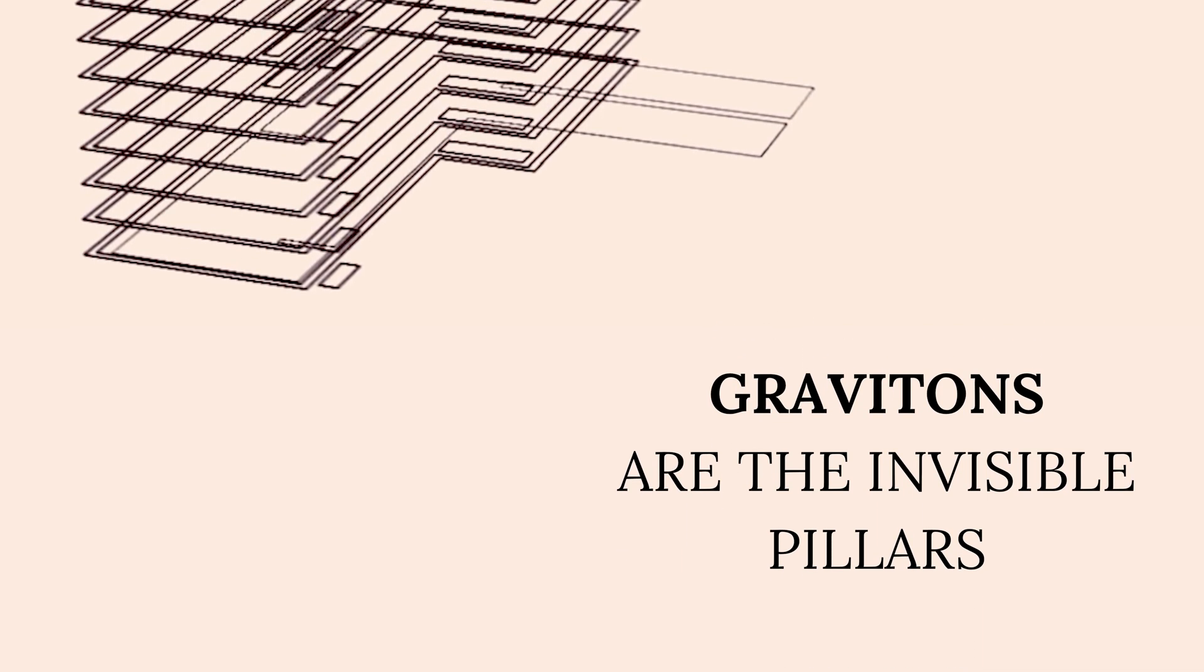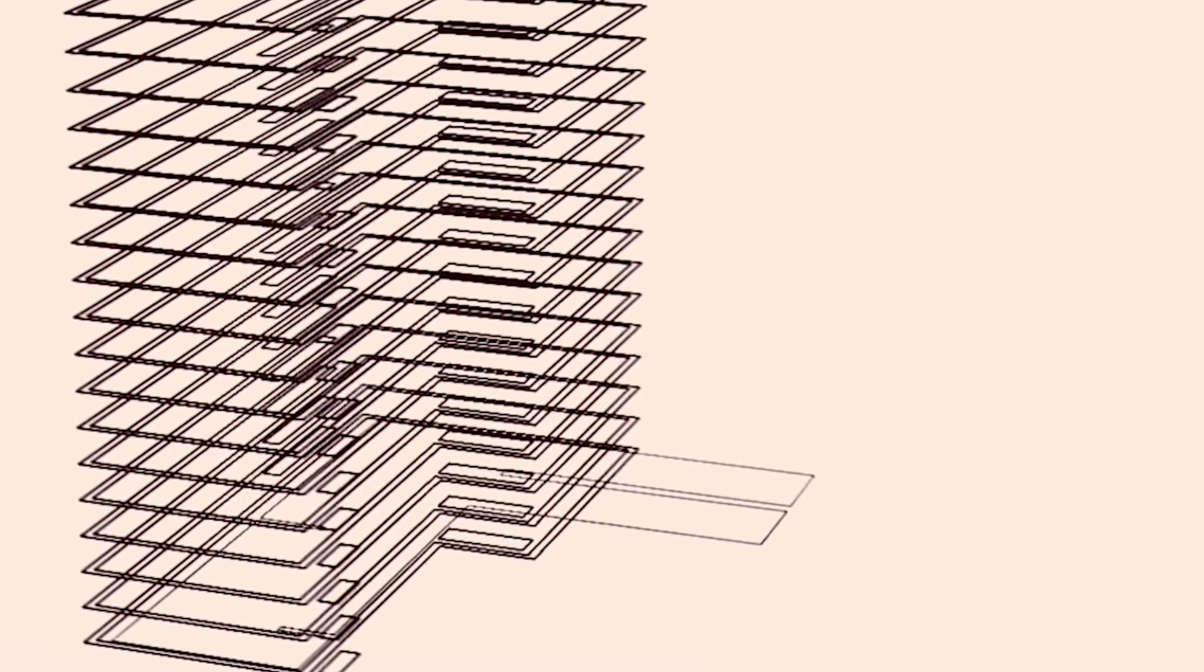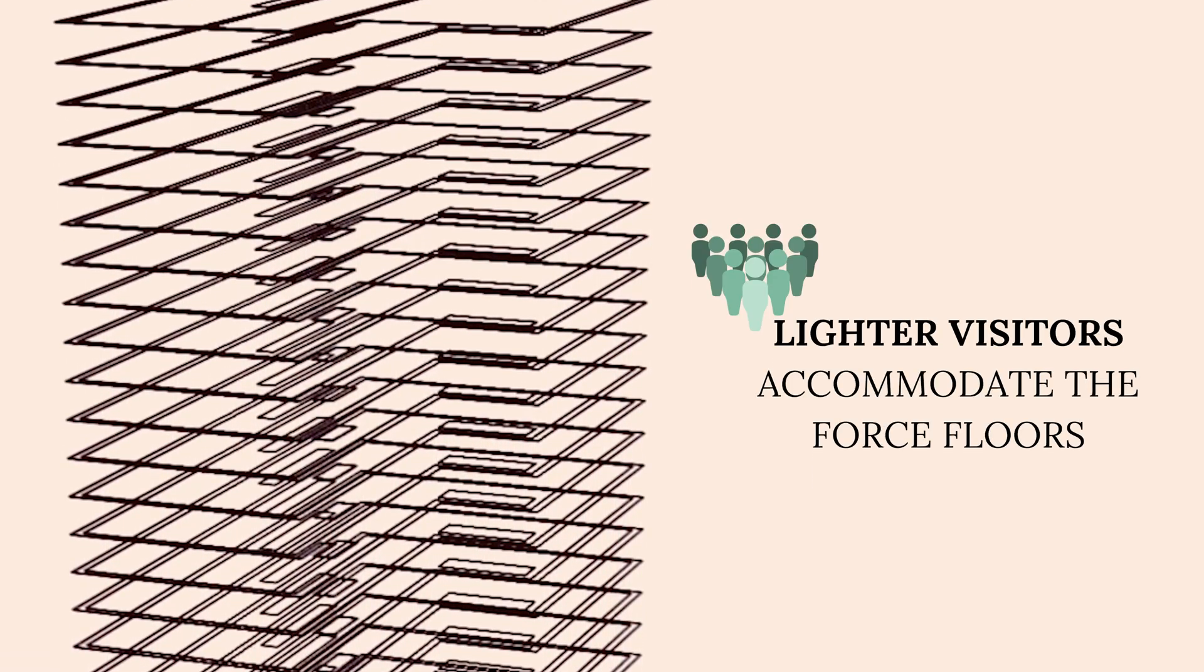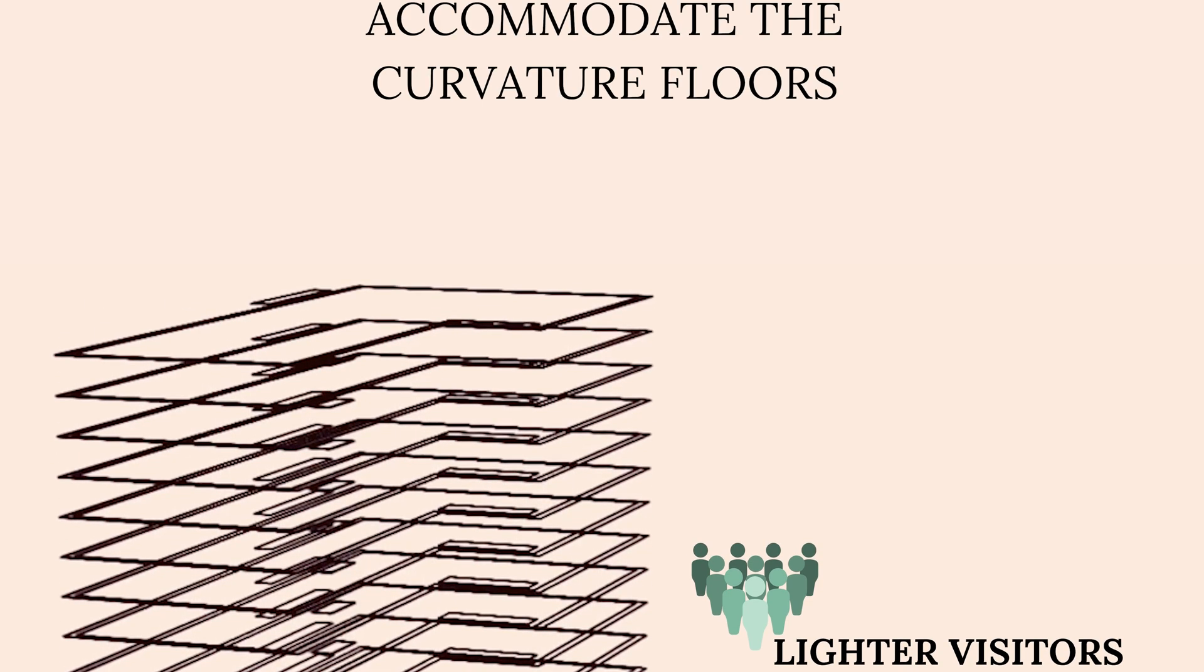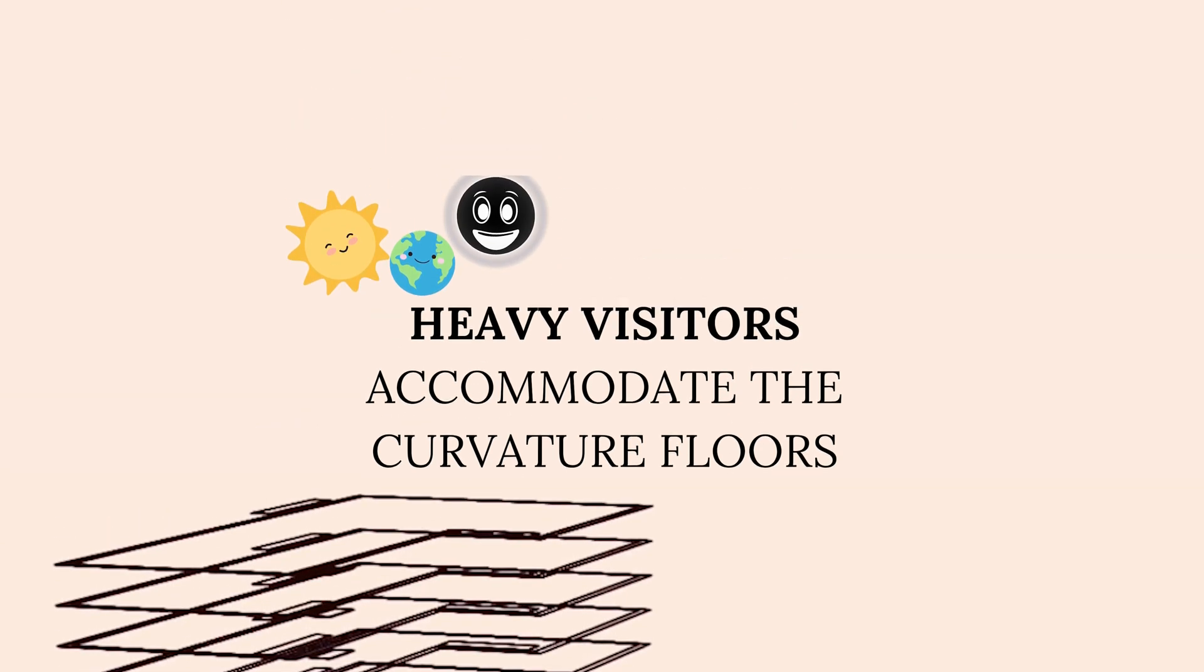The hotel is held firmly into the ground of physics by the pillars of quantum gravity, gravitons. But we don't yet have the tools to dig in and see the pillars. The pillars are hidden but they do exist. Lighter visitors like us can accommodate lower floors where the hotel serves the illusion of a force. And the heavier, much more massive visitors like stars, planets and black holes can accommodate the top floor where the balconies show the true scope of physics through curvature.